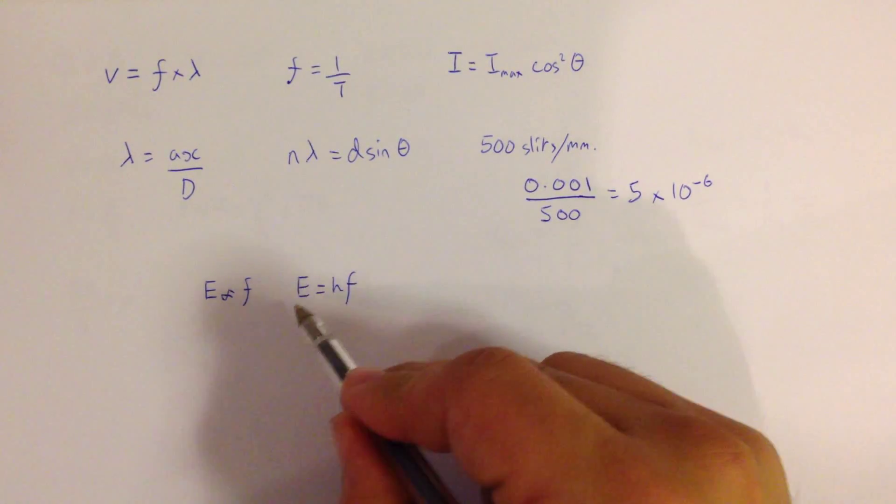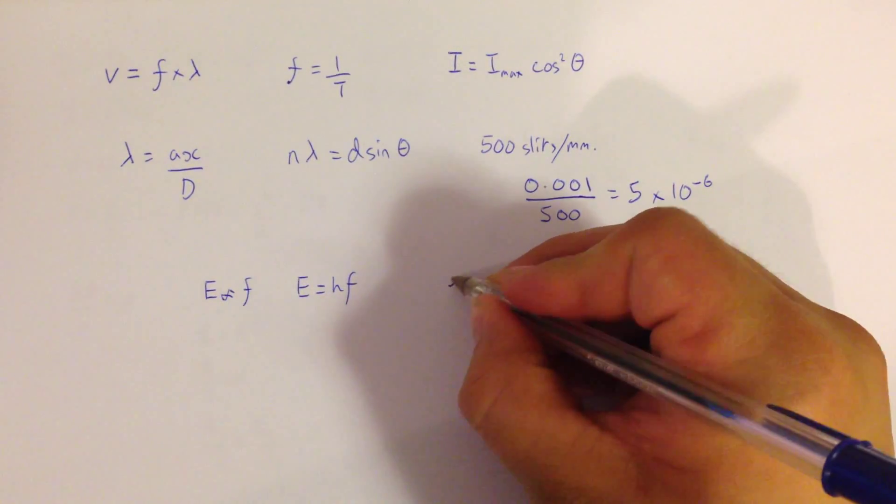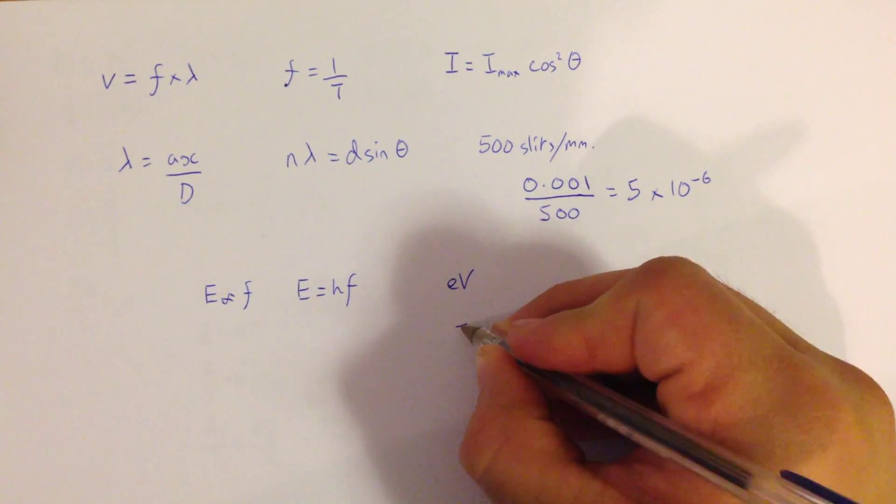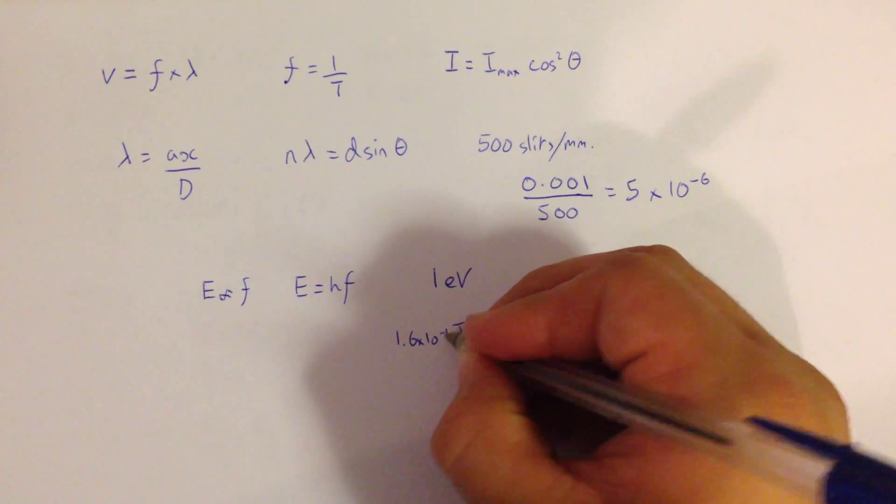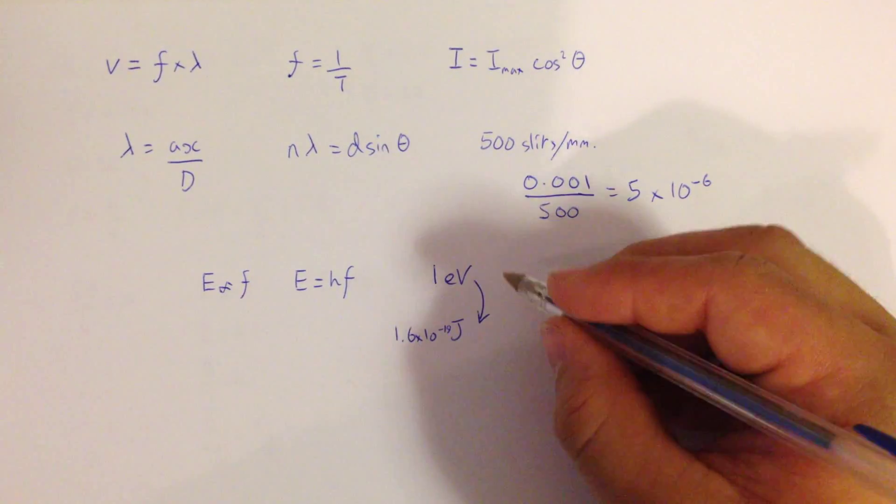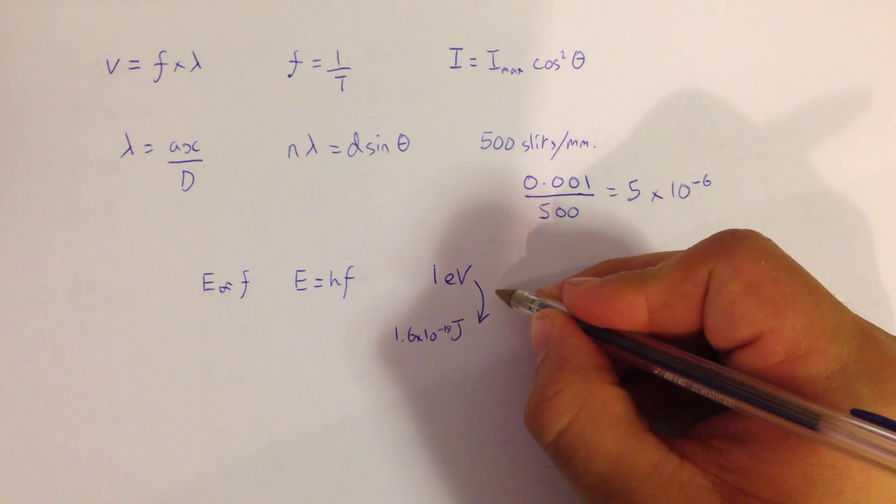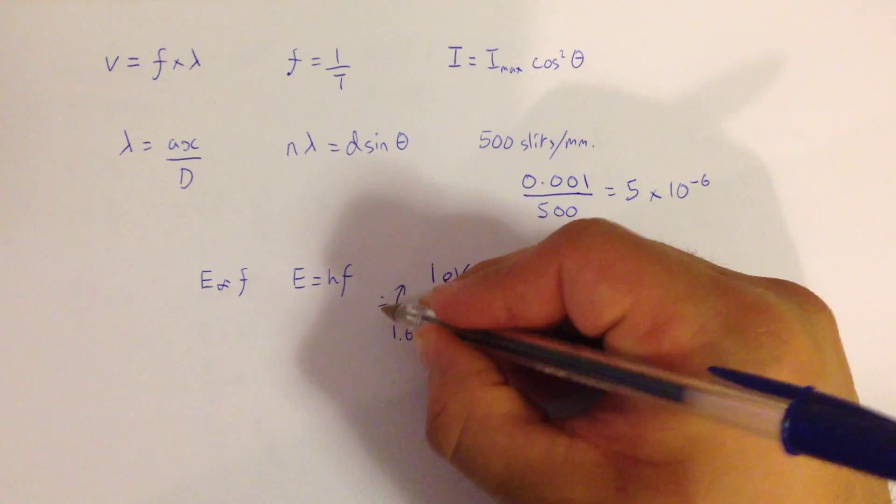Now often we might have energy given to us in electron volts or in joules, so you need to know the conversion between electron volts and joules. One electron volt is 1.6 times 10 to the minus 19 joules, so to go that way, you have to times by that number, and to go that way, you divide.